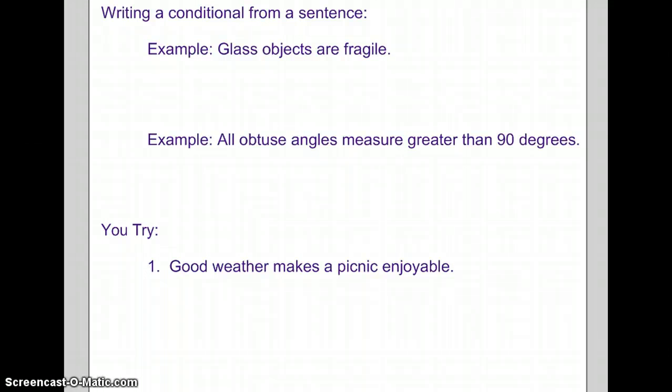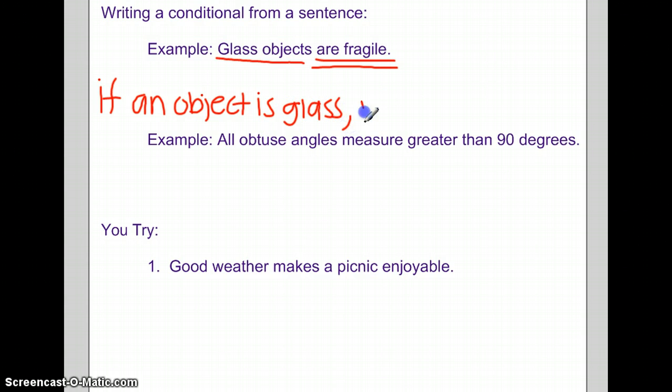Now we know what a Conditional Statement is. It's an If-Then Statement. We're going to take the sentences below and write them as a Conditional Statement. We're going to figure out what our Hypothesis is. Glass Objects are Fragile. Our Object is Glass Objects, and we know that they are Fragile. So we're going to start with If an Object is Glass. That's our Hypothesis. Now, we're going to write our Conclusion. Then it is Fragile.